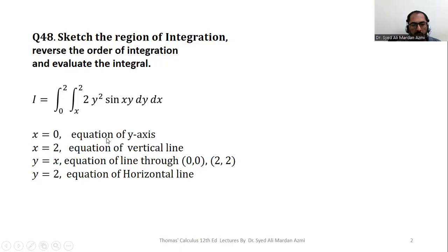x equal to 0 is the equation of the y-axis. x equal to 2 is the equation of a vertical line which passes through the point x equal to 2 along the x-axis. y equal to x is the equation of a line which passes through points having the same value of x and y coordinates, like (0,0), (1,1), (2,2). And y equal to 2 is the equation of a horizontal line which passes through the point y equal to 2 along the y-axis.